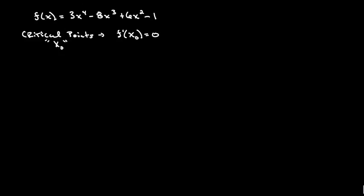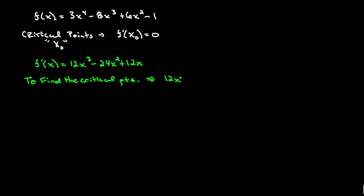So let's go ahead and take a look at this function and find its derivative. So f prime of x is equal to 12x to the 3rd minus 24x squared plus 12x. Now to find the critical points, we take that and we set it equal to 0.